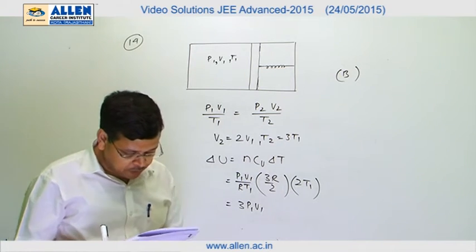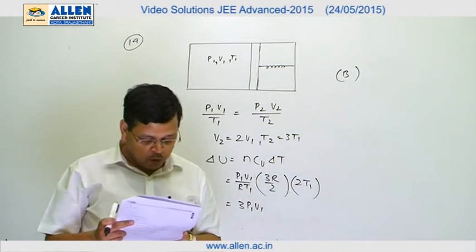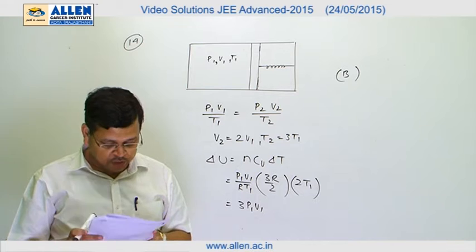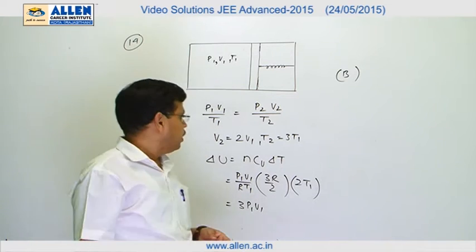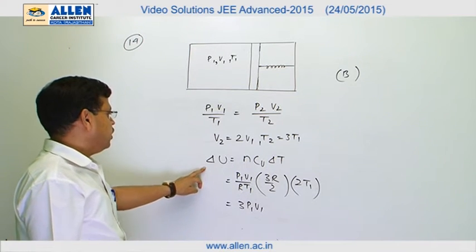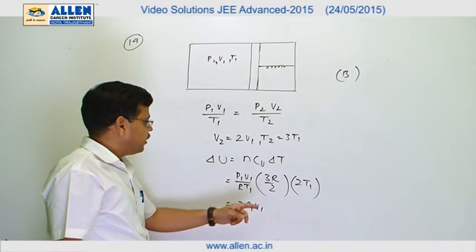We will find that when final volume is double the initial and final temperature is three times the initial temperature, then we can calculate the change in internal energy, and that is nCᵥΔT.